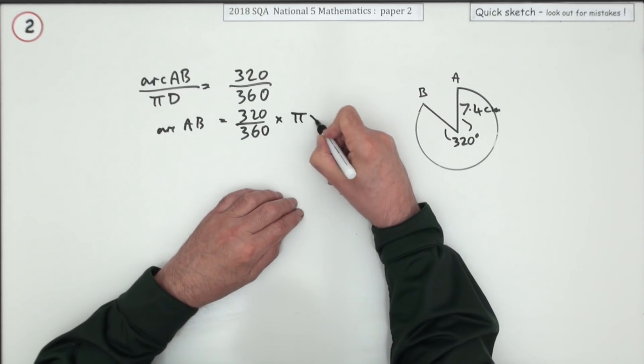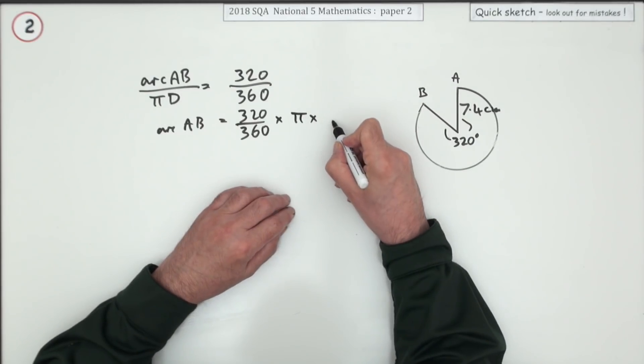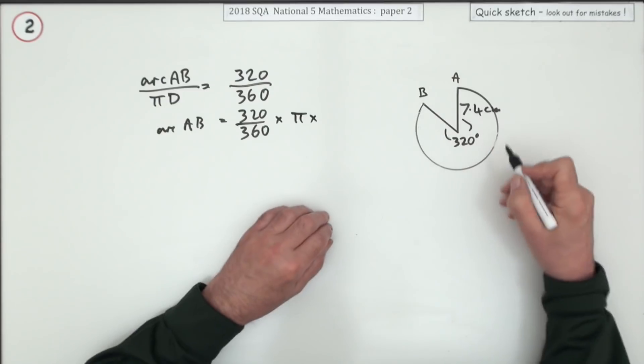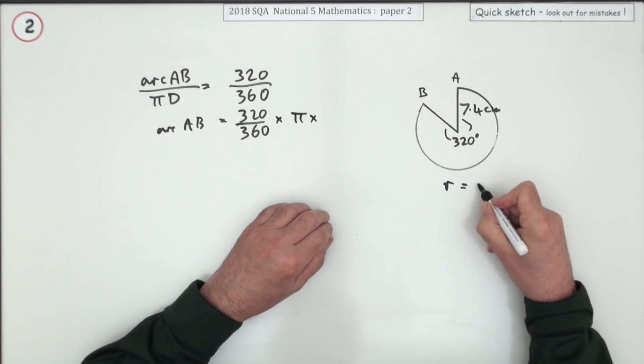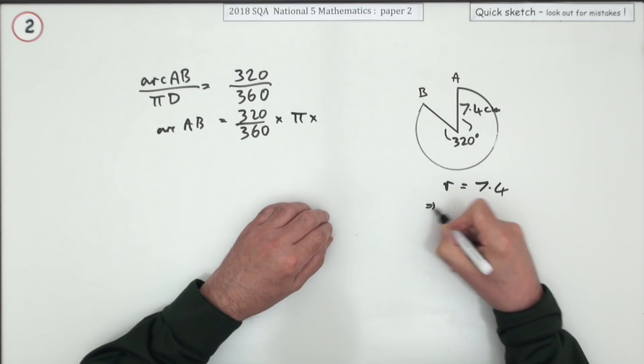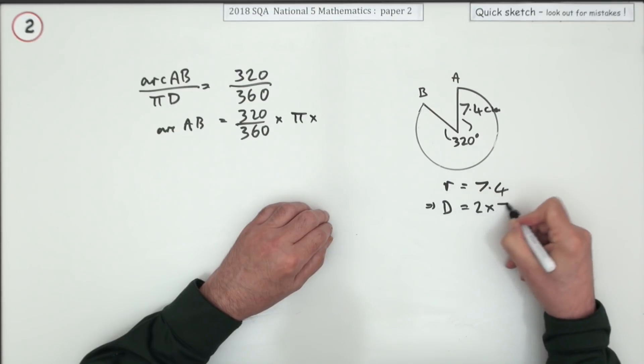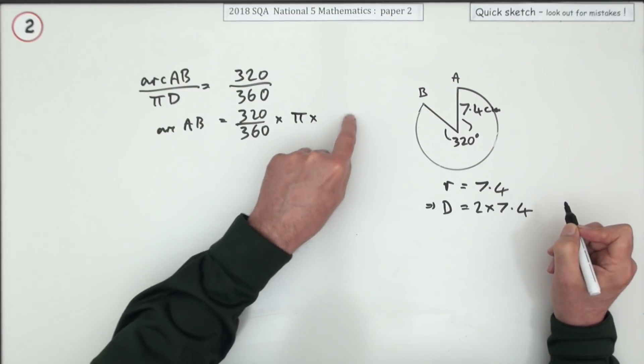Times pi times... Now you can either put 2 times 7.4 or you can take time somewhere to write this. R equals 7.4 which means D is 2 times 7.4. I would just put 2 times 7.4 there.